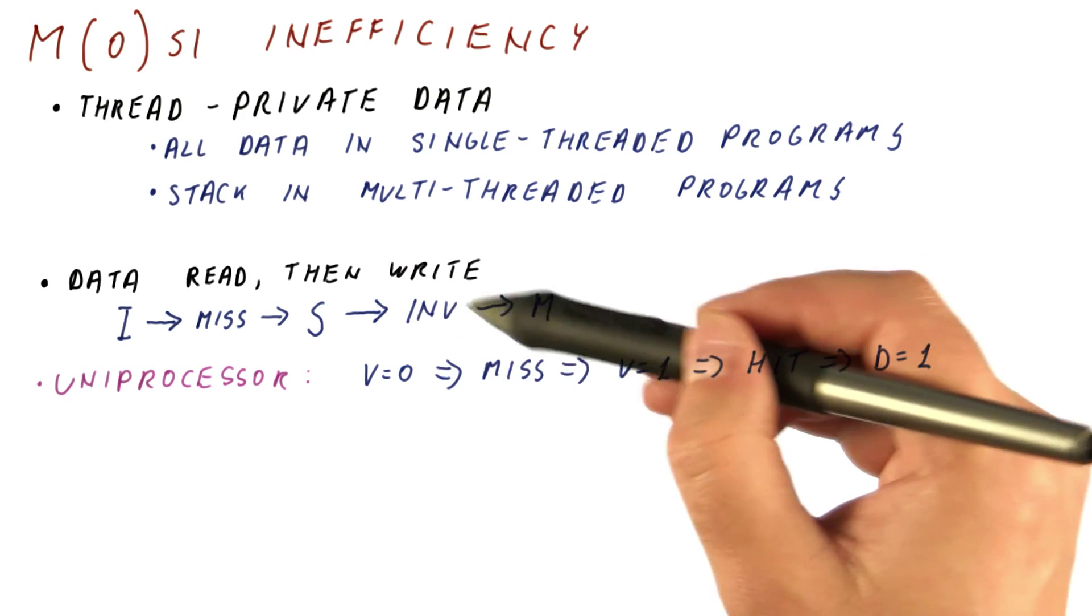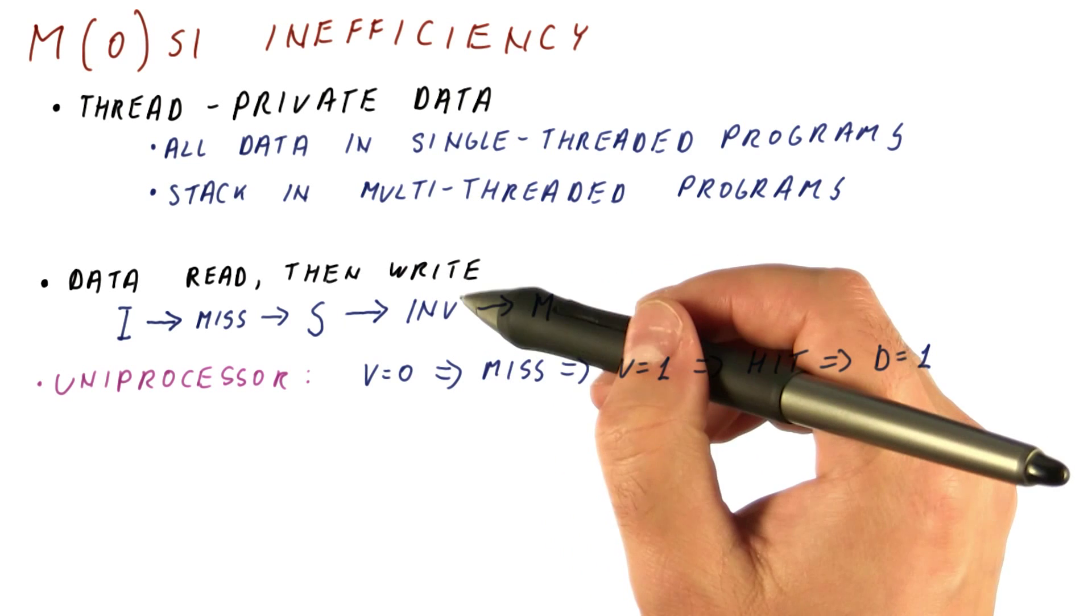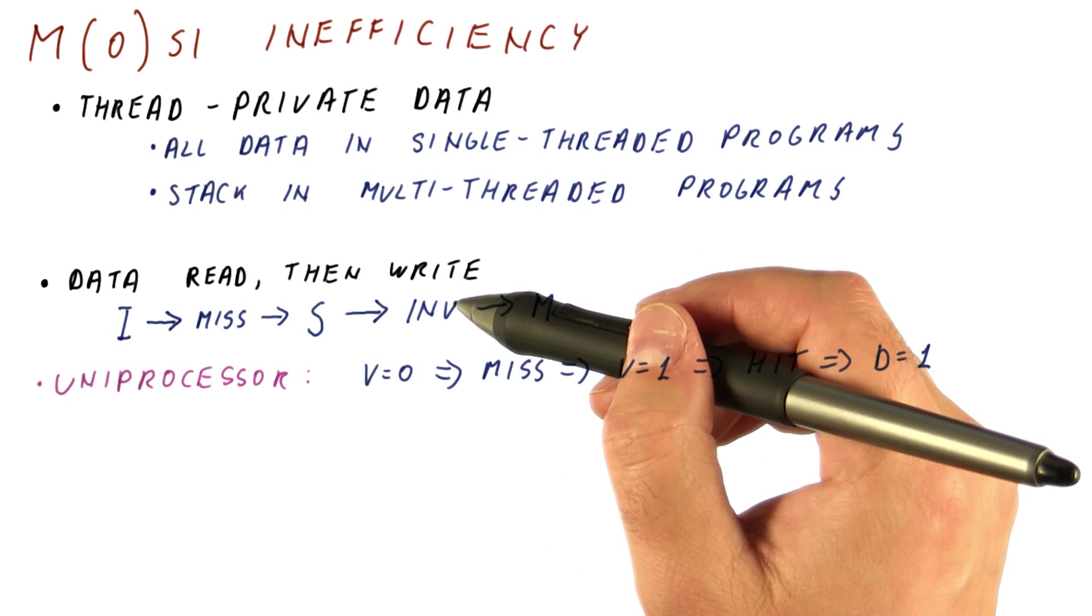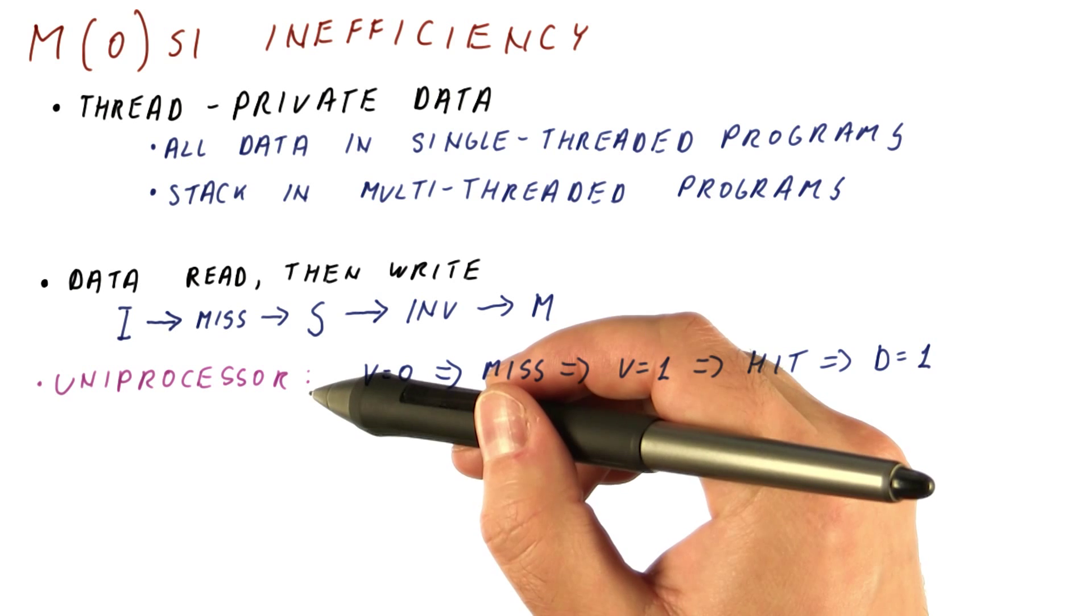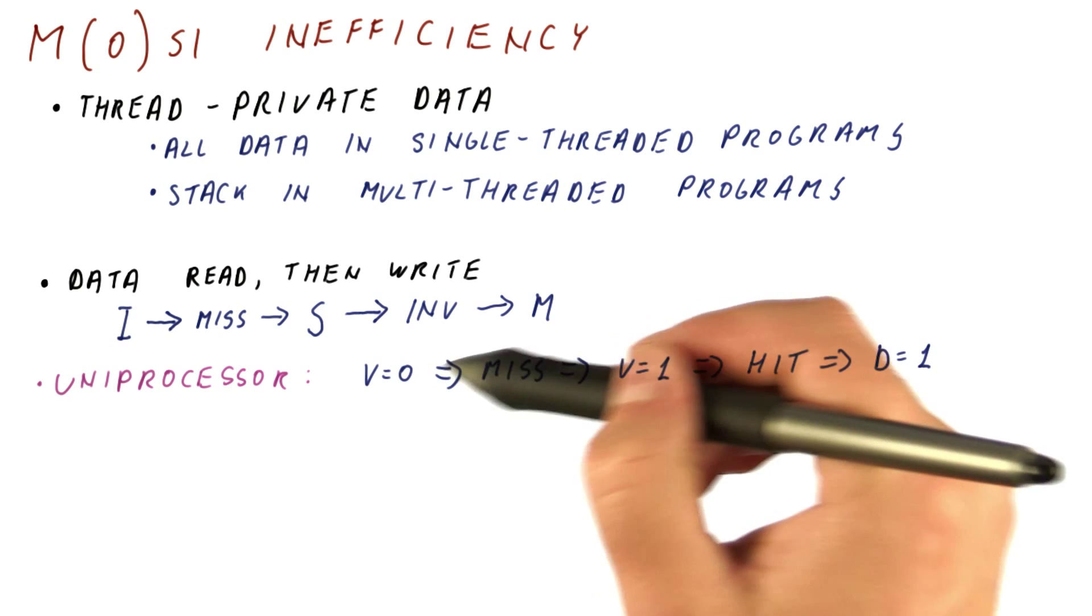This is still a lot slower than just a cache hit. It's okay to pay the penalty for having coherence if we're actually sharing data, because a uniprocessor would not provide coherent behavior. But here, we actually have no sharing whatsoever.